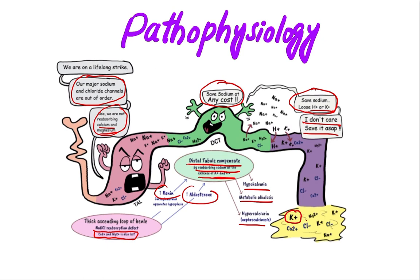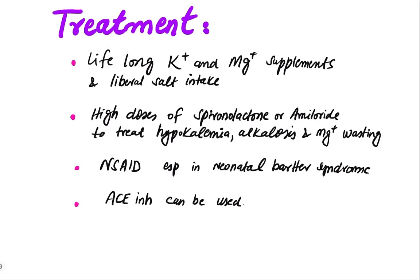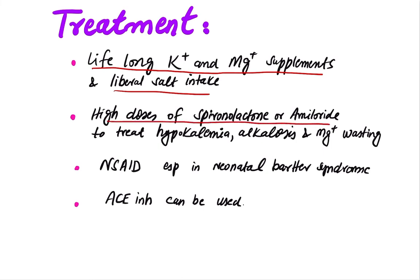In the urine there will be increased levels of potassium, increased chloride, and increased sodium excretion. The treatment of Bartter syndrome includes lifelong potassium and magnesium supplements and liberal salt intake. High doses of spironolactone or amiloride are used to treat hypokalemia, alkalosis, and magnesium wasting.